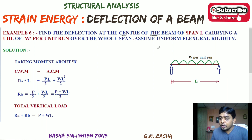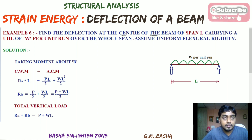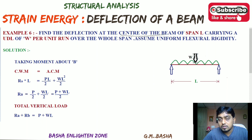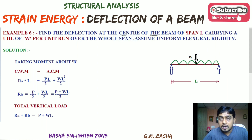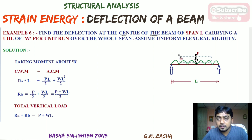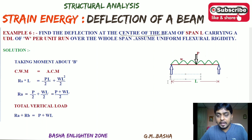As I explained in the previous lecture, wherever we are going to find the deflection, at that point we have to introduce an imaginary point load. Whenever a UDL is given and we are solving using the strain energy method, I am introducing an imaginary point load at the center point — take that as P. The uniform distributed load will be W per unit run, and the supports are Ra and Rb.